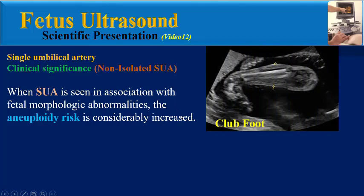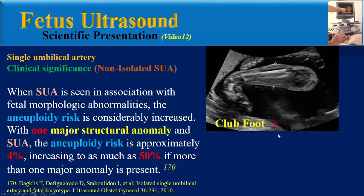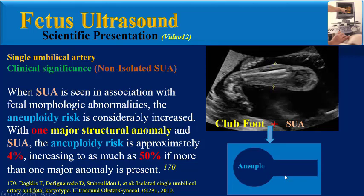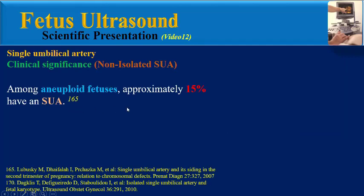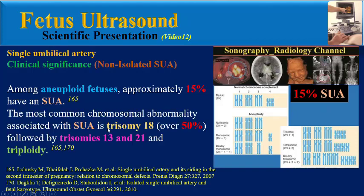For non-isolated single umbilical artery, when it is seen in association with fetal morphologic abnormalities, the aneuploidy risk is considerably increased. With one major structural anomaly and single umbilical artery, the aneuploidy risk is approximately four percent, increasing to as much as 50 percent if more than one major anomaly is present. Among aneuploid fetuses, approximately 50 percent have a single umbilical artery. The most common chromosomal abnormality associated with it is trisomy 18, followed by trisomy 13 and 21, and less commonly triploidy.